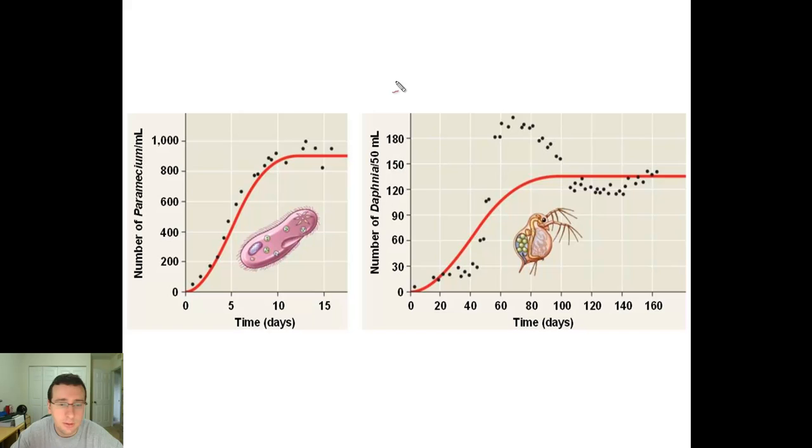But one way or the other, the general pattern is that populations will start slowly because of the Allee effect. They will pick up very fast, and then they will reach the carrying capacity one way or the other, and they will kind of stay around that line because of that.